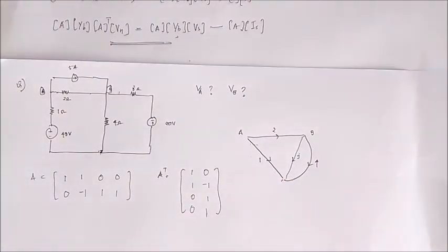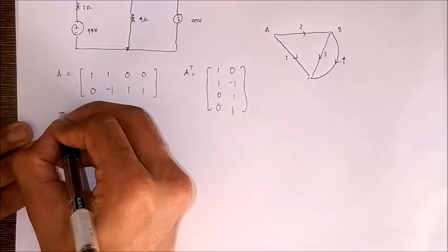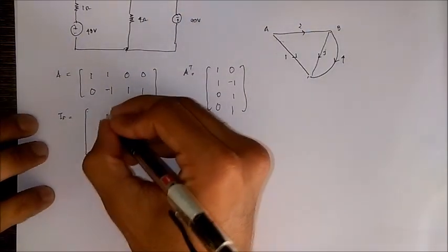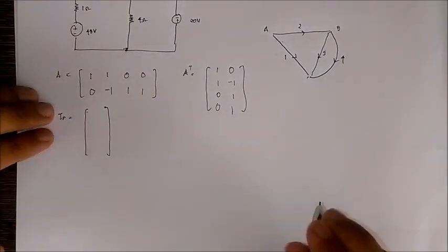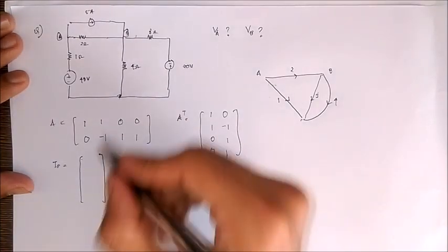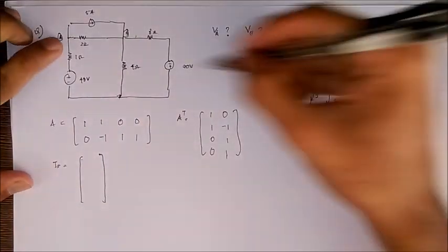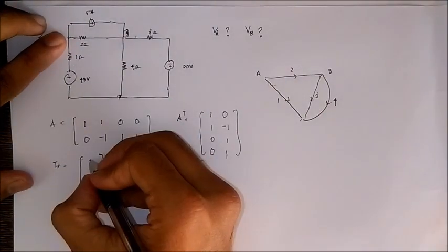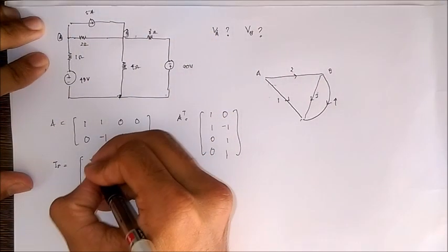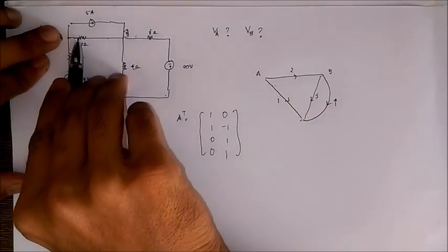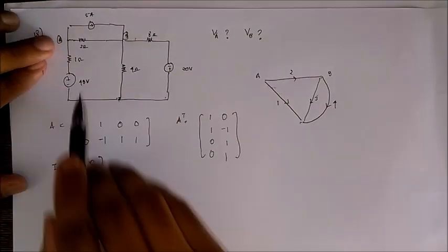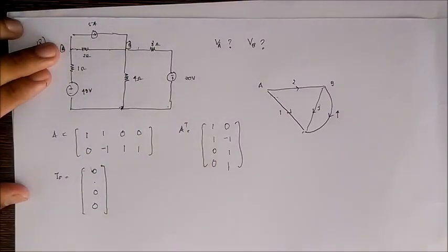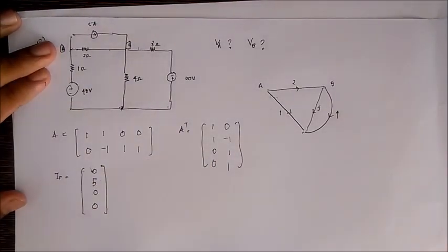Now we write the current source matrix IS. We have four branches so it will be a 4-by-1 column matrix. The current source is in parallel with the second branch, so all other branches get zero. For branch two, the 5-ampere source is opposite to the assumed direction of branch current, so we give it plus five.